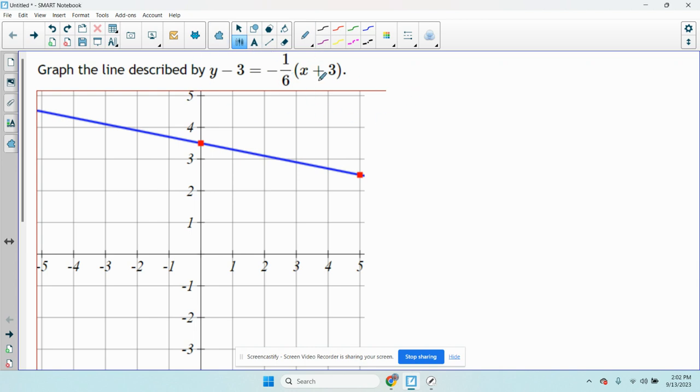But we're going to just leave it the way it is because it's in point-slope. And if you remember, point-slope formula is y minus y1 equals m times x minus x1, where the point on the line is x1, y1, and my slope is m.